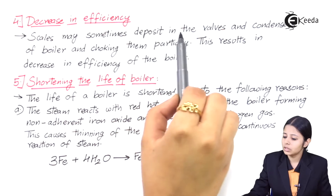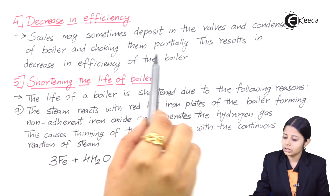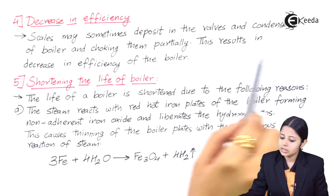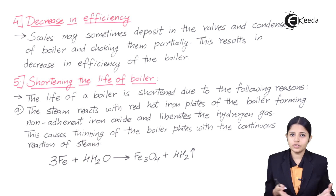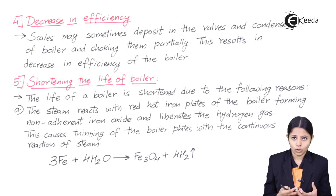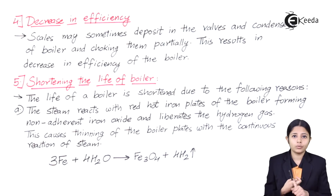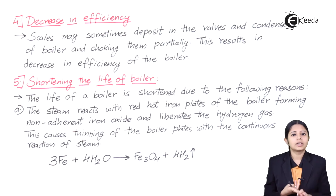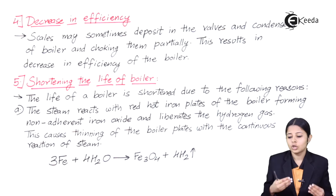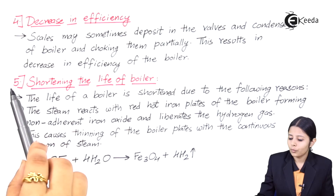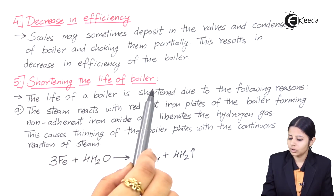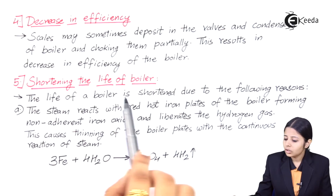The fourth disadvantage is decrease in efficiency. Scales may sometimes deposit in the valves and condensers of the boiler, choking them partially, which results in a decrease in efficiency. Scales and sludges generally also decrease efficiency because we have to provide over-fueling to overheat the boilers, and they may crack or distort the entire boiler system, so the efficiency of the boiler decreases overall.